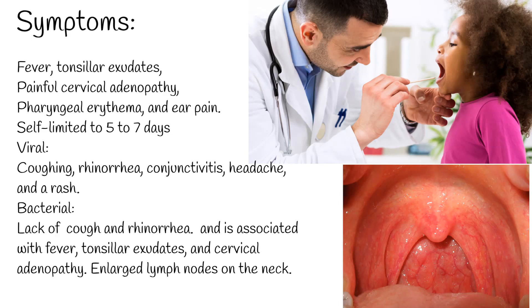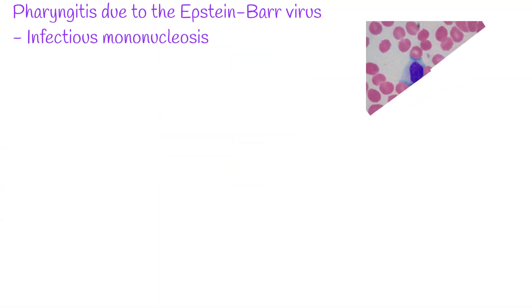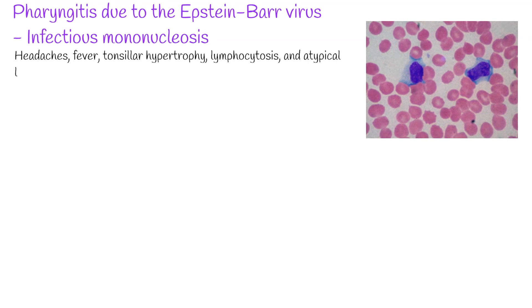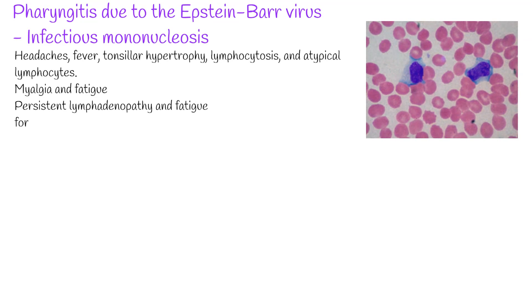Enlarged lymph nodes on the neck. Pharyngitis due to the Epstein-Barr virus, otherwise known as infectious mononucleosis, can cause headaches, fever, tonsillar hypertrophy, lymphocytosis, and atypical lymphocytes. Myalgia and fatigue are commonly reported symptoms. Patients can have persistent lymphadenopathy and fatigue for up to 3 weeks. It is important to assess for hepatomegaly or splenomegaly.